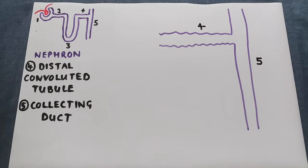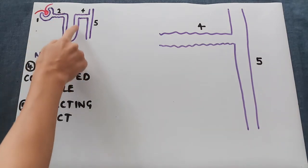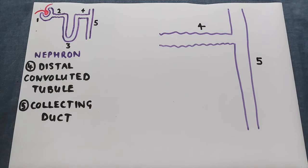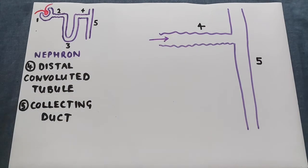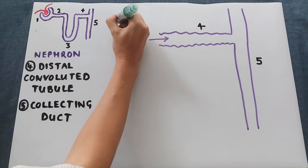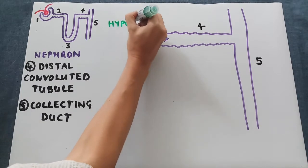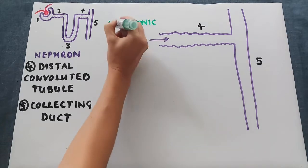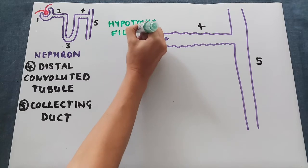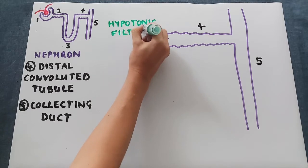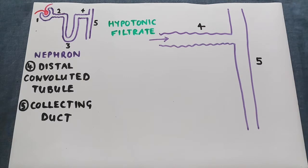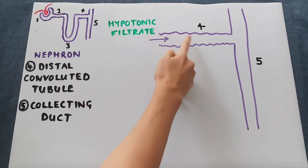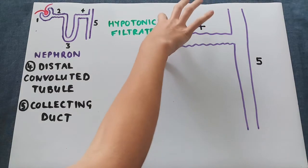Previously we had the video about the loop of Henle — that was section three. Coming into our distal convoluted tubule, we have our filtrate. Following from the loop of Henle, our filtrate is hypotonic. This means it has a lower solute concentration than the surrounding fluid, so this filtrate here has not got very many solutes in it compared to the surrounding tissue fluid.